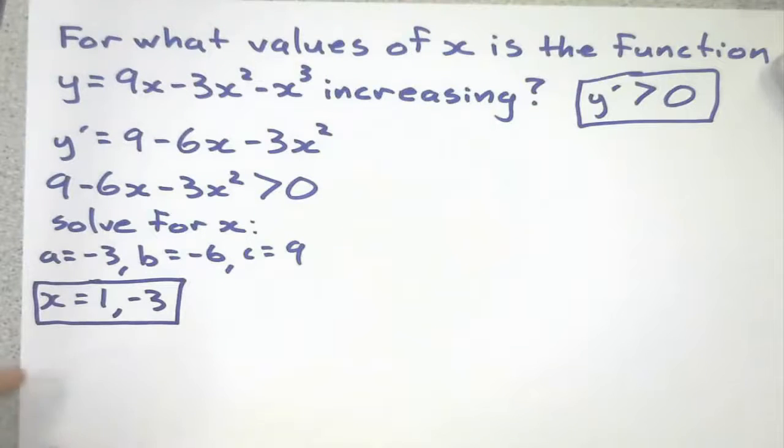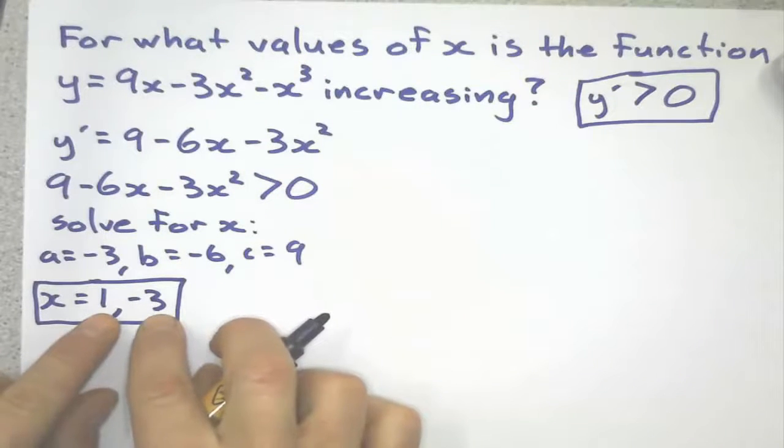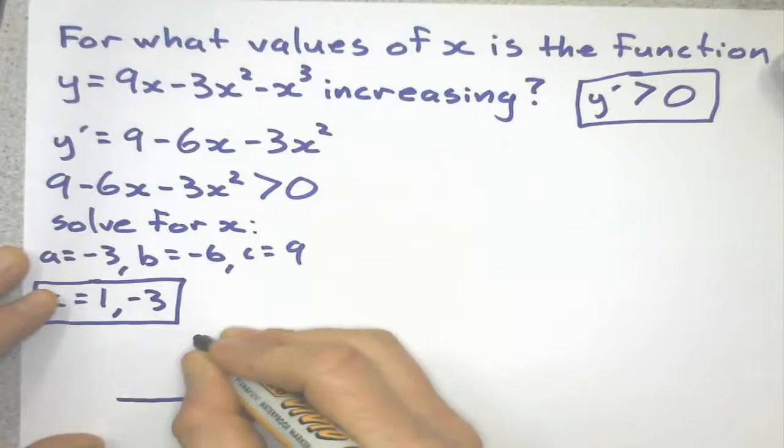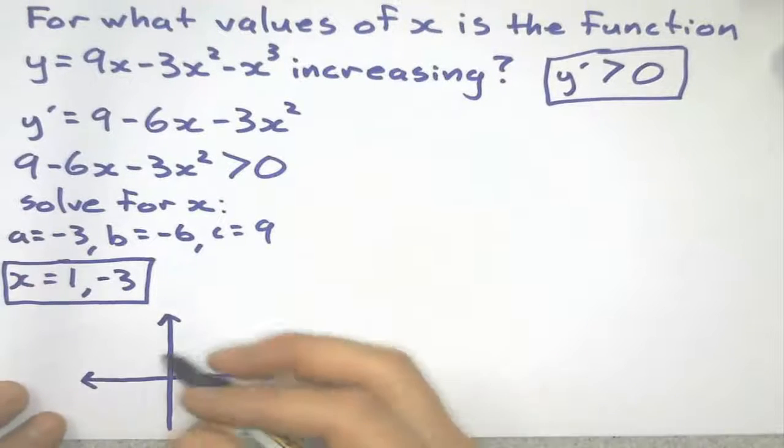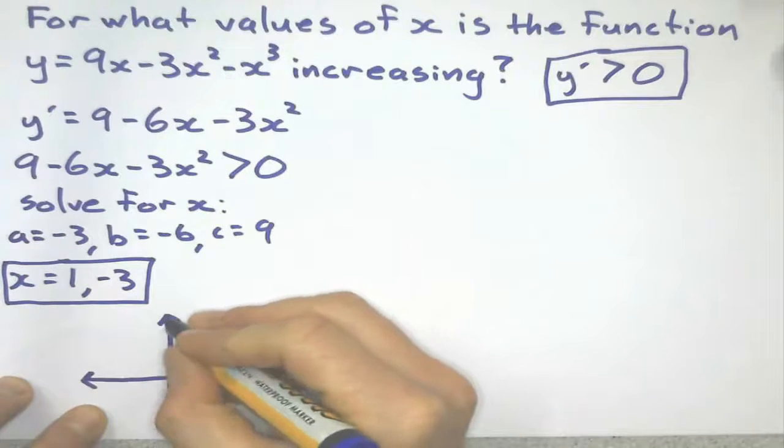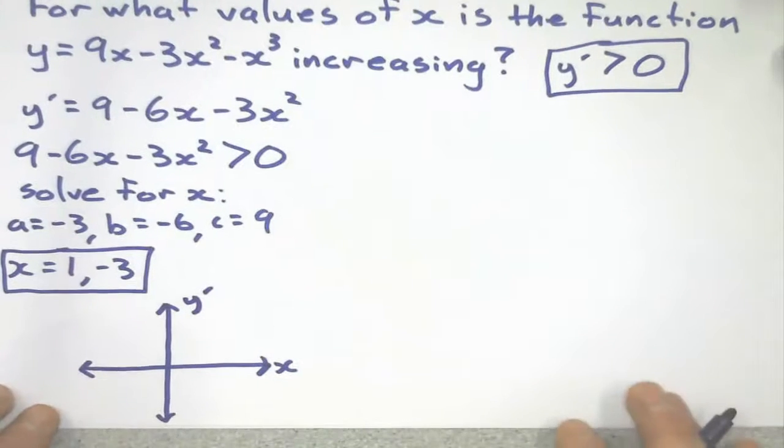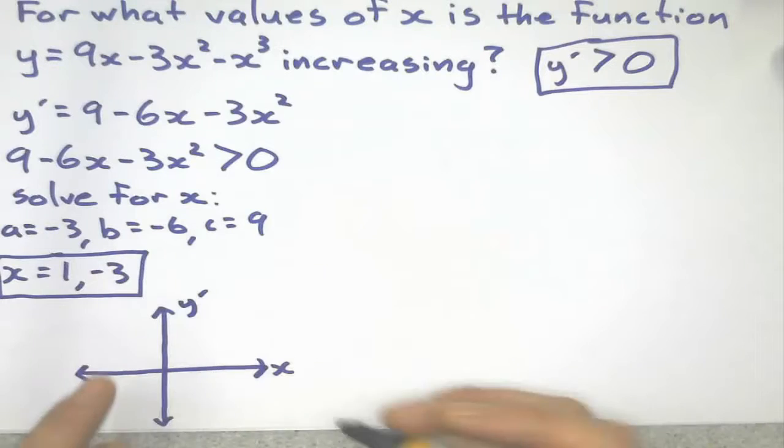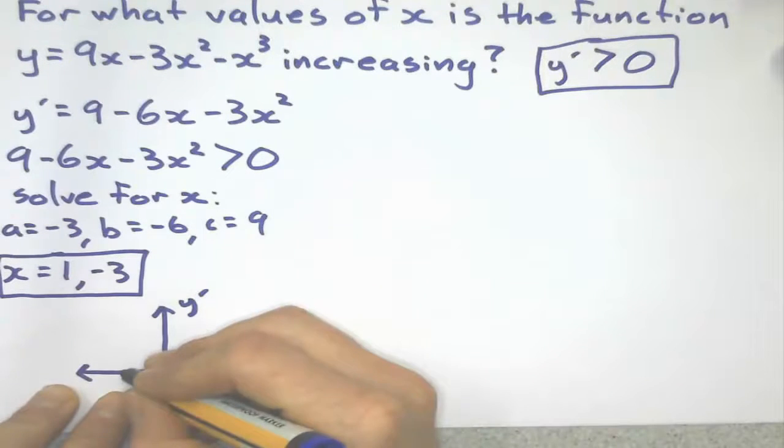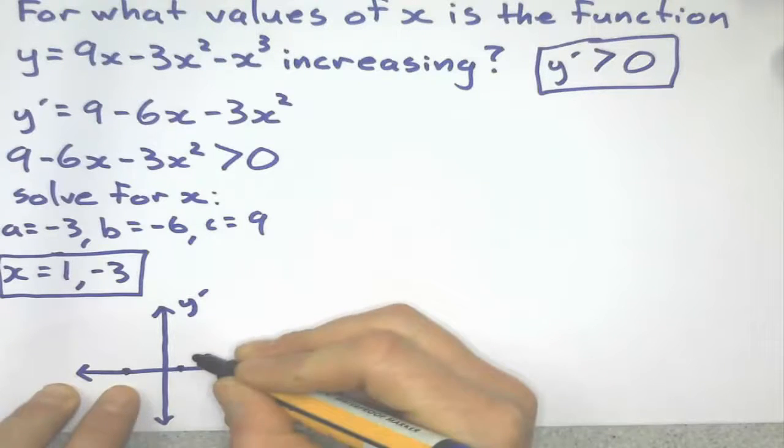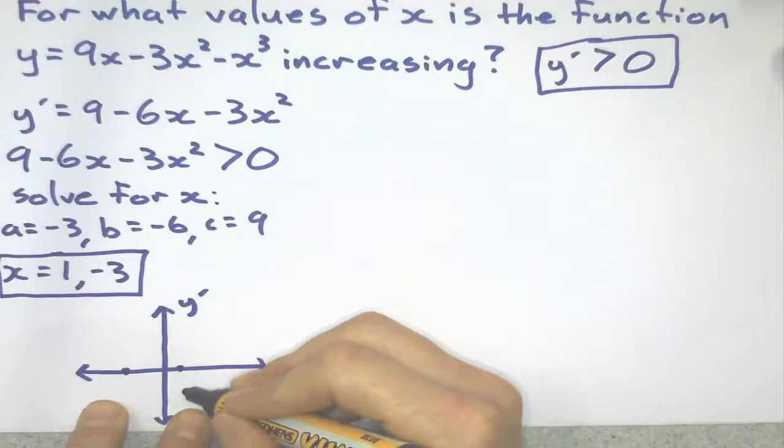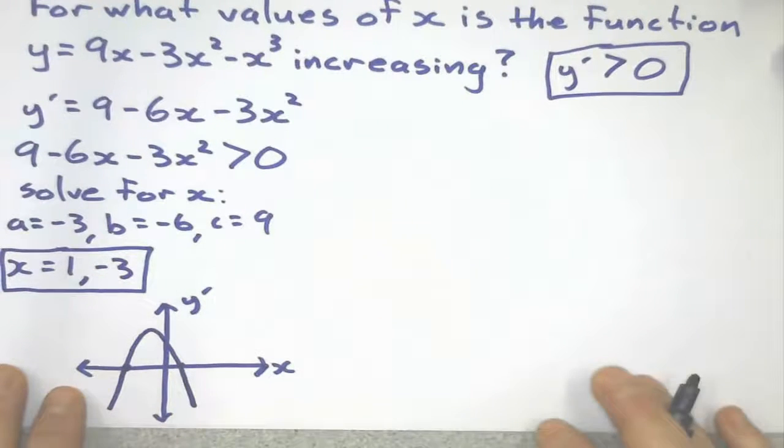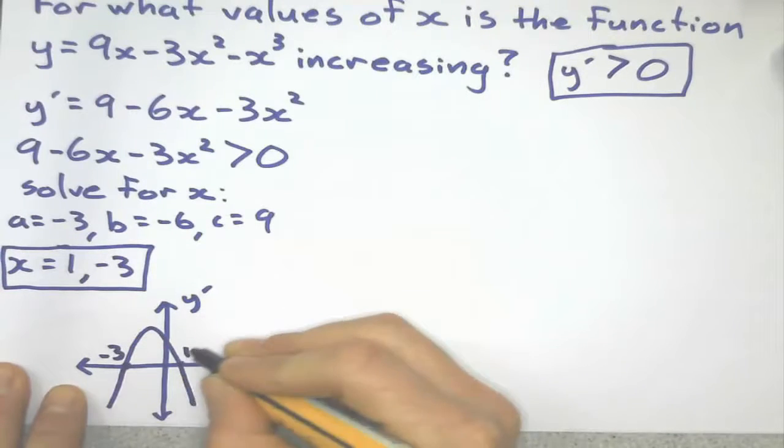Now that's pretty important. Those tell me the roots of this equation right here. The roots are where it crosses the x axis. Here's x, and this axis is not going to be y but it's going to be y dash. It's going to tell me what the gradient is doing. This equation tells me it's going to hit the x axis at 1 and negative 3. So negative 3 is right there and 1 is right there. And this has to be a parabola.